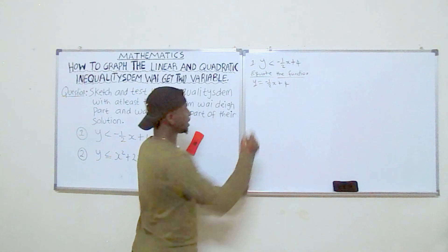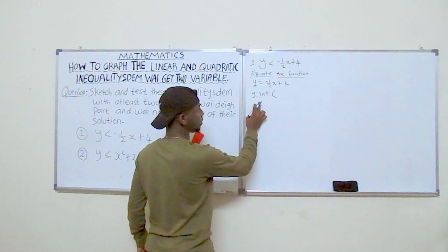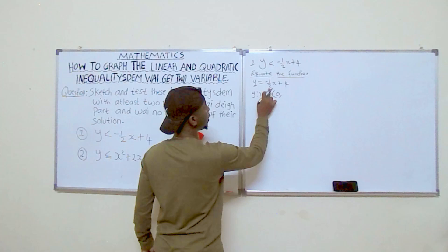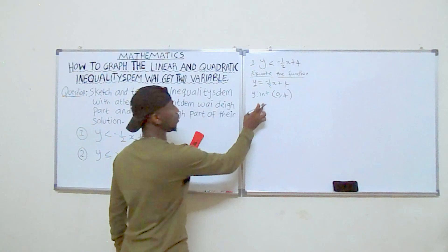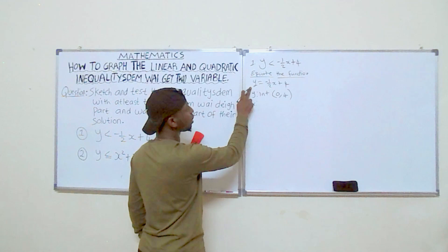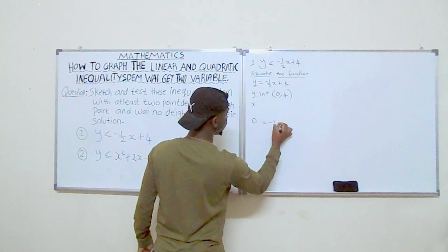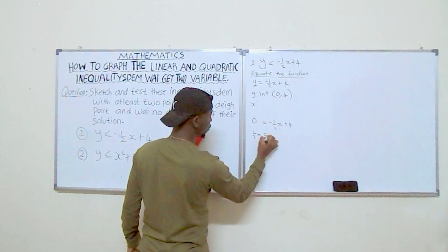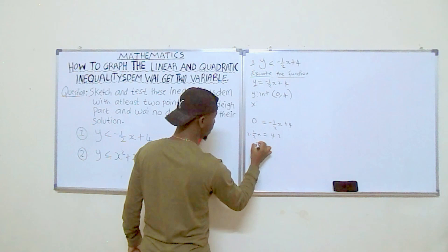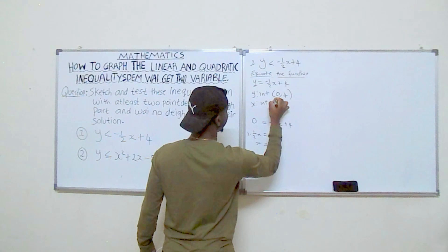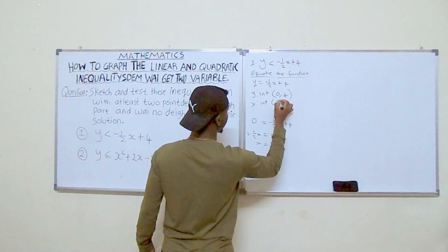To get the y-intercept we make x equal to zero. So if x equals zero, then y will be four — so our y-intercept is (0, 4). For the x-intercept we make y equal to zero. We get zero equals negative one-half x plus four, which gives half x equals four. Multiplying both sides by two, x equals eight. So our x-intercept is (8, 0).